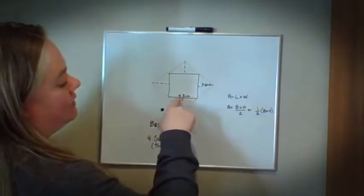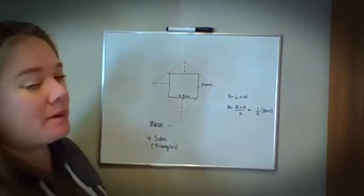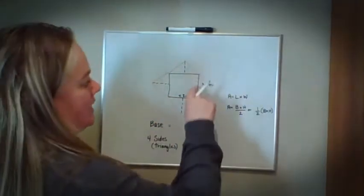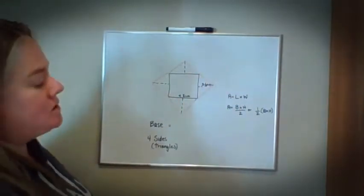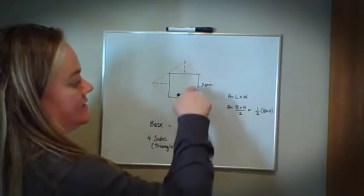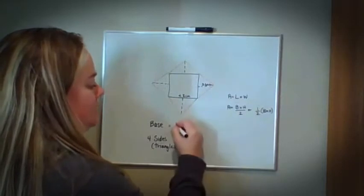Notice that I only have one dimension for my square listed, which is 4.2 centimeters. Remember, if it's a square, you don't have to have this dimension listed as well because it's going to be 4.2 as well. If it's not listed, you're going to assume that it's still the same.